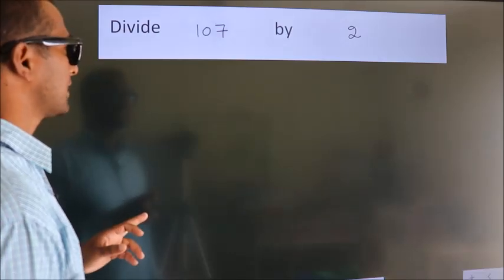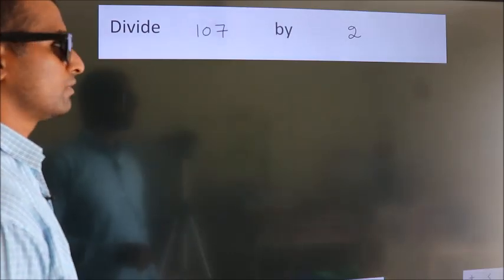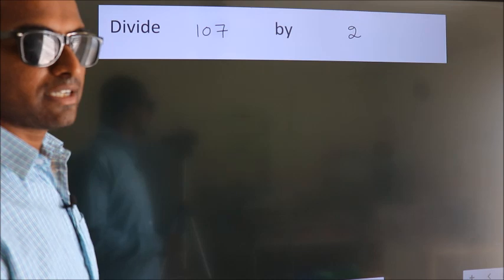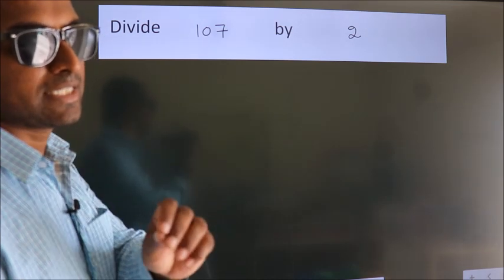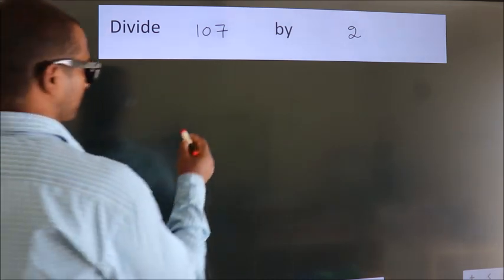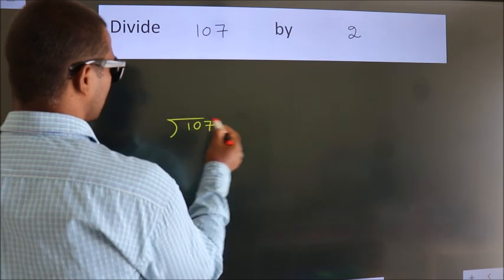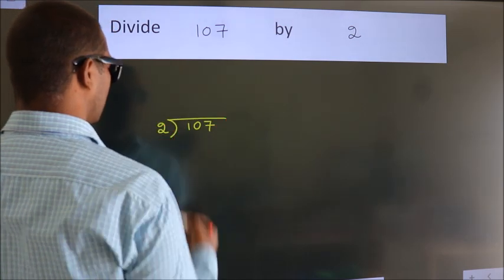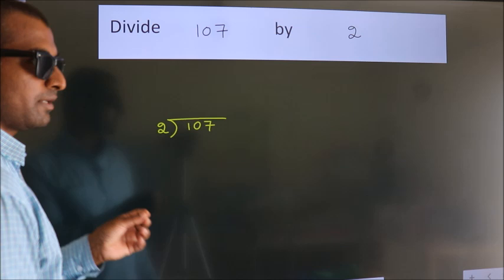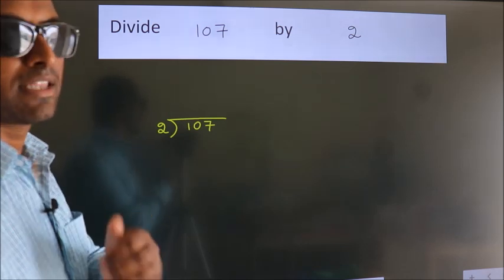Divide 107 by 2. To do this division, we should frame it in this way: 107 here, 2 here. This is your step 1.